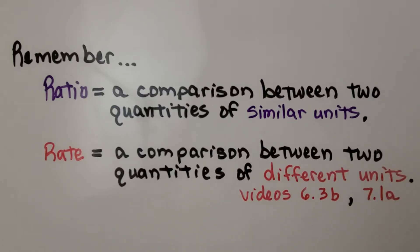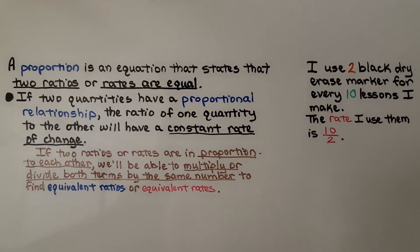Remember, a ratio is a comparison between two quantities of similar units, and a rate is a comparison between two quantities of different units. There's links to those videos in the description. A proportion is an equation that states that two ratios or rates are equal. If two quantities have a proportional relationship, the ratio of one quantity to the other will have a constant rate of change. What that means is, if two ratios or rates are in proportion to each other, we'll be able to multiply or divide both terms by the same number to find equivalent ratios or equivalent rates.